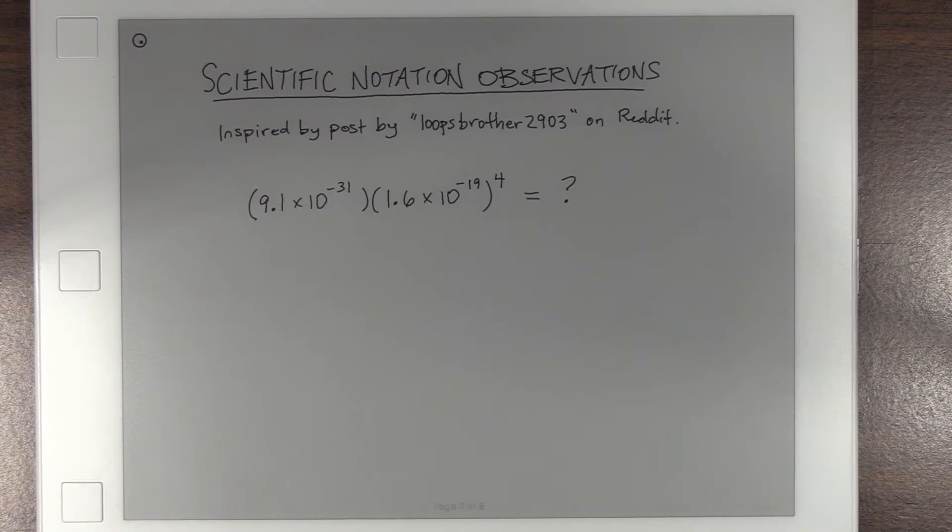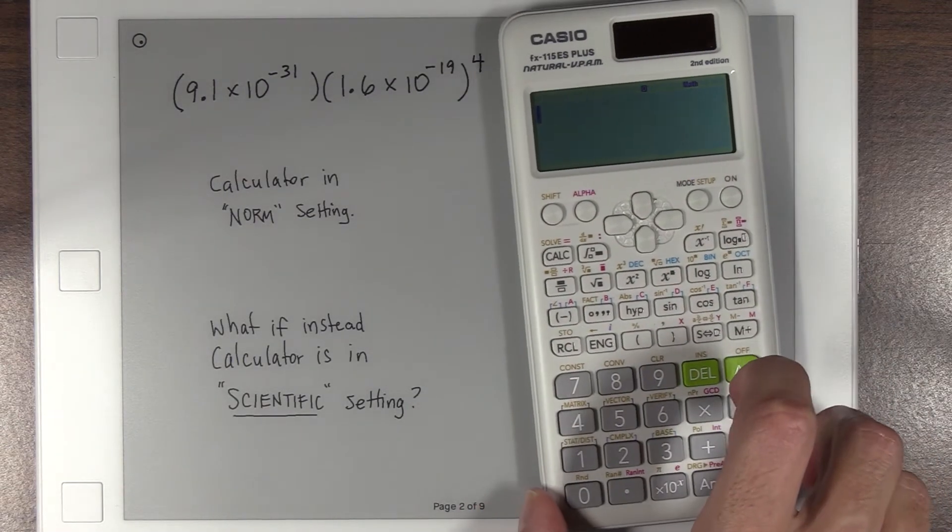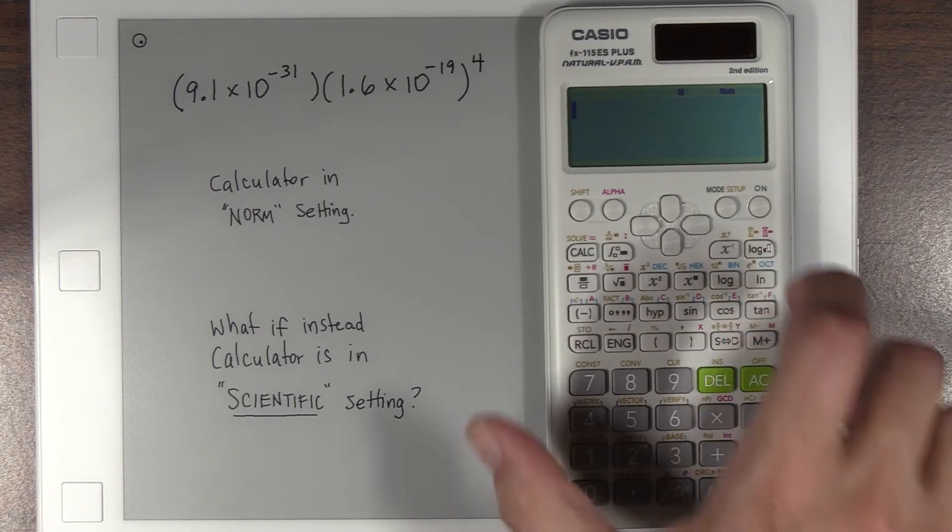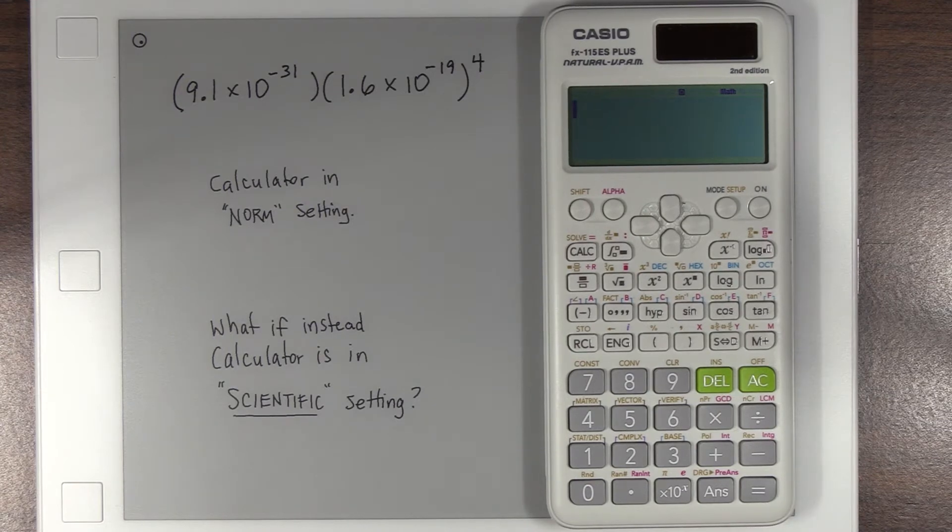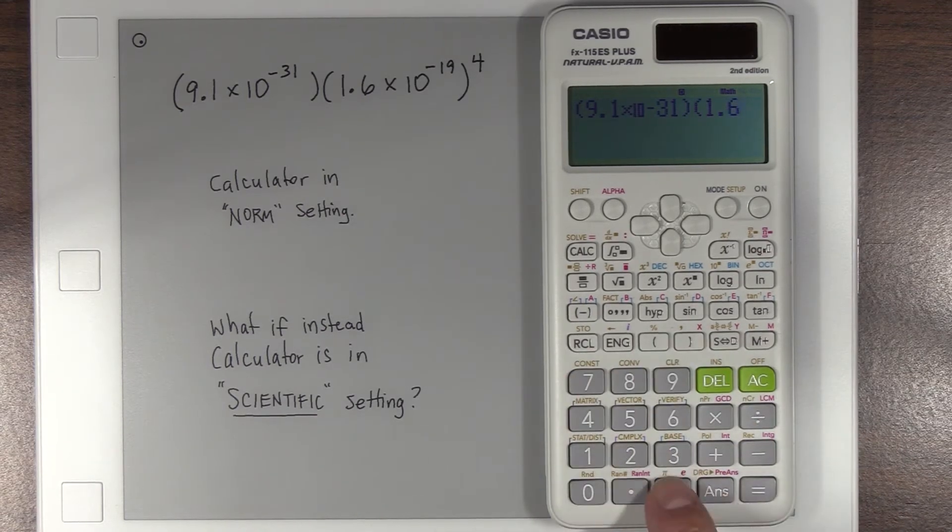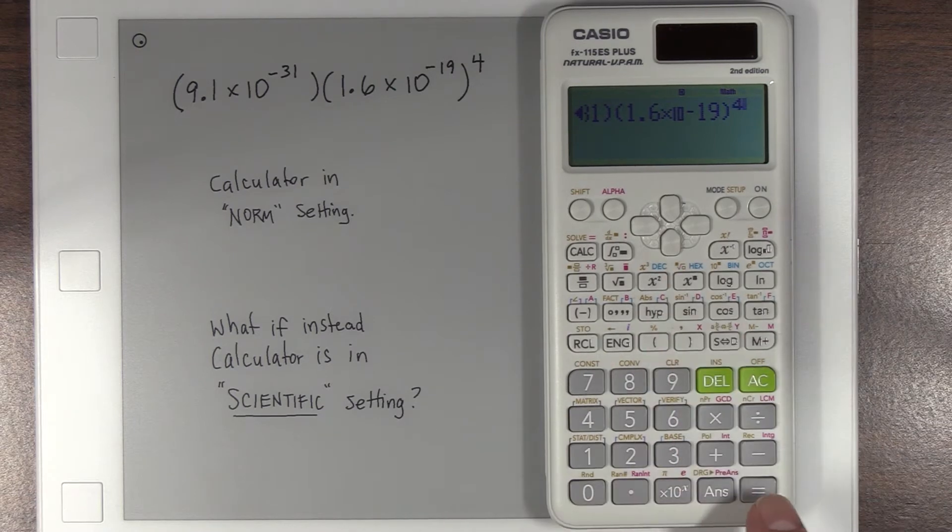So let's try it. I don't have a 991EX, but I do have this one, which is comparable to the 991ES in other countries. Here in the U.S., it's the 115ES. Anyway, first of all, I just typed it in. I hit enter, and sure enough, I got zero.